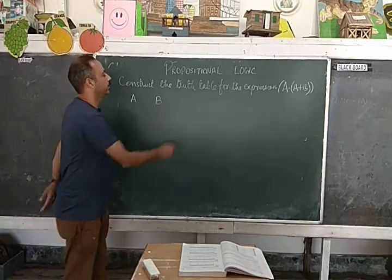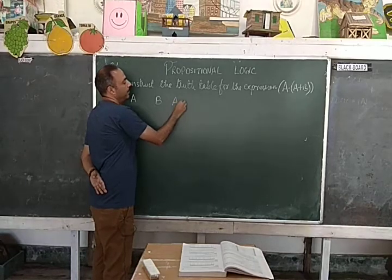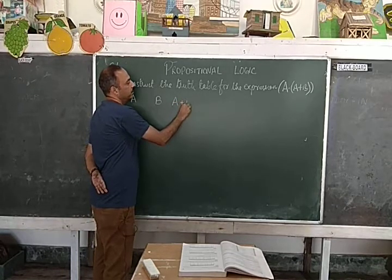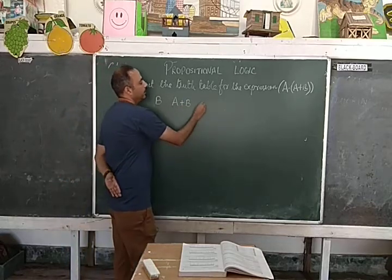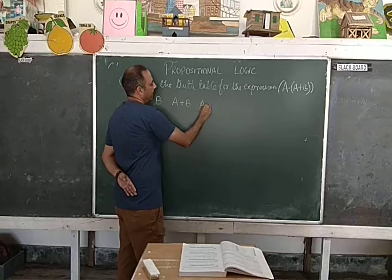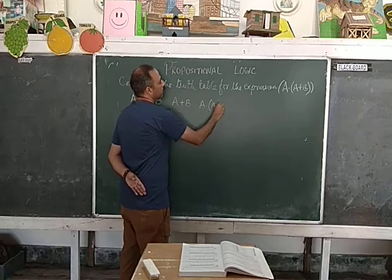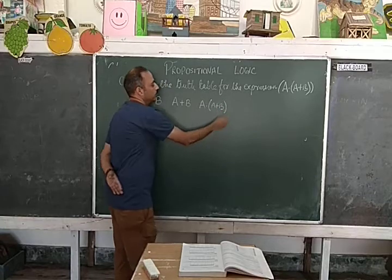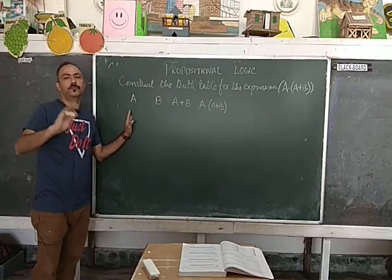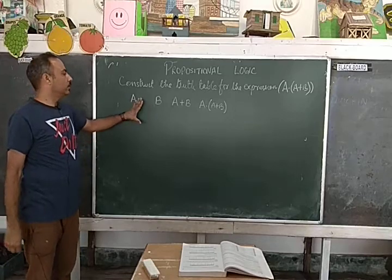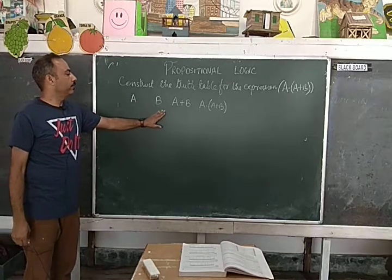Now in the second column we have to break the expression A plus B. After that we have to evaluate A and A plus B. So this is our truth table. A truth table is nothing but the combination of true and false. So how many true and false combinations do we have?